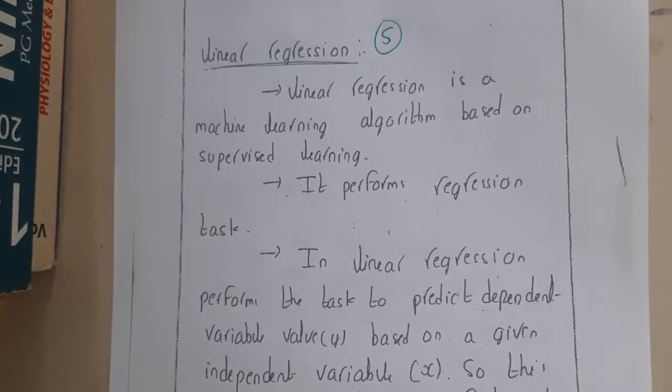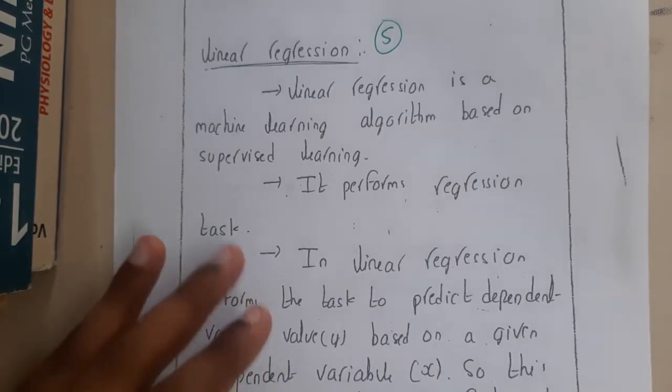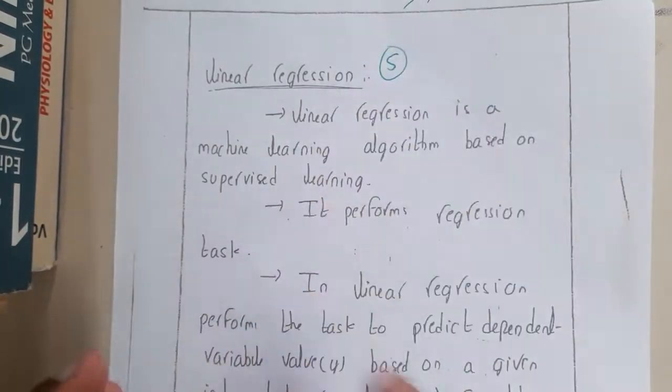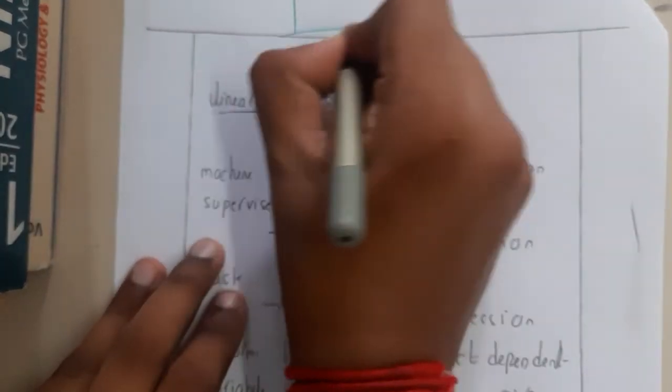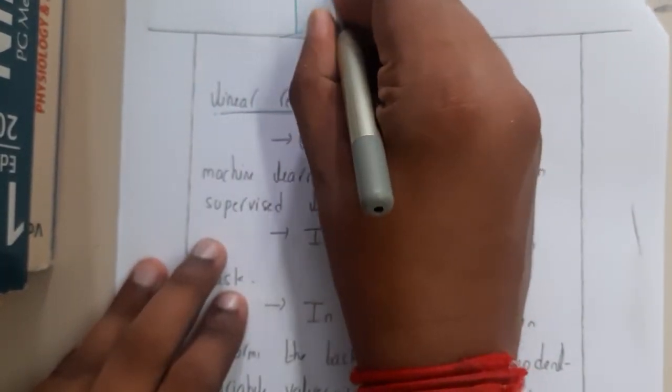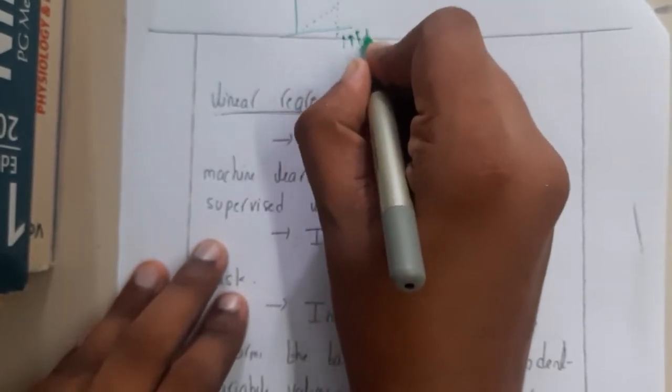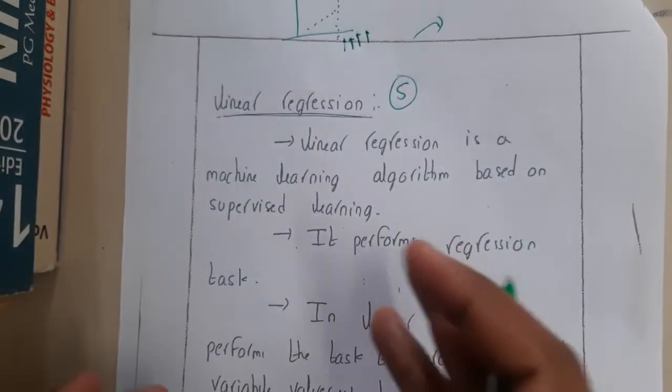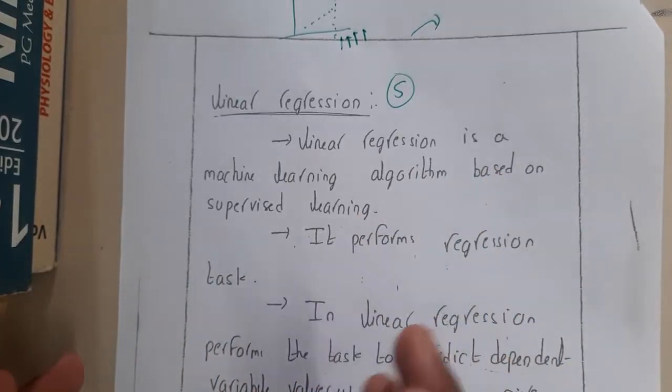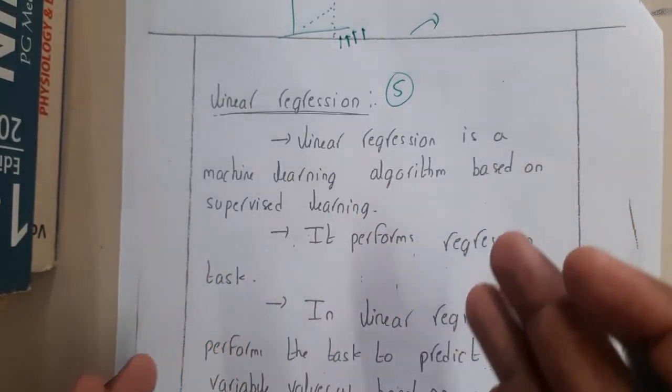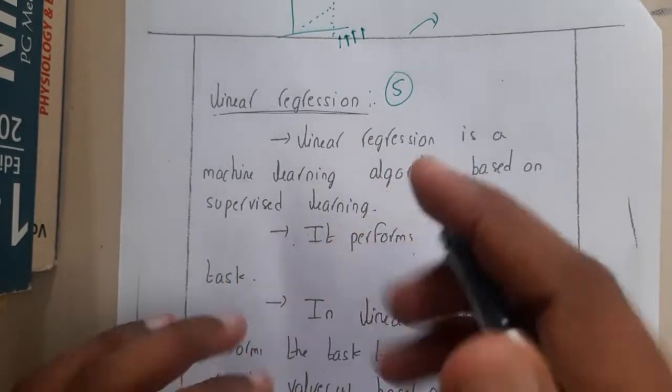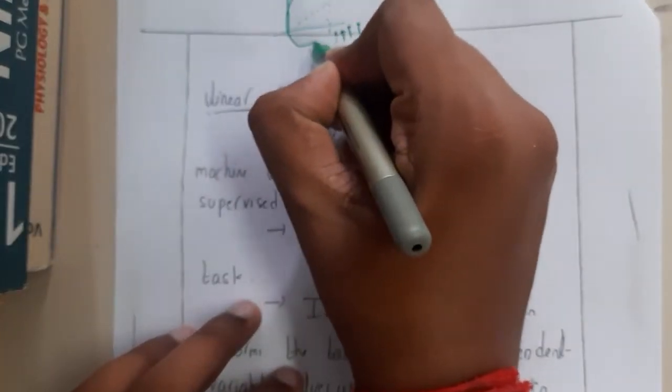Using this algorithm or regression method, you can predict future values. Basically, you will be given some input data up to some point, and they will ask you to predict the data for the next few years, months, or periods. This concept of predicting future values using machine learning with supervised learning input is called linear regression.